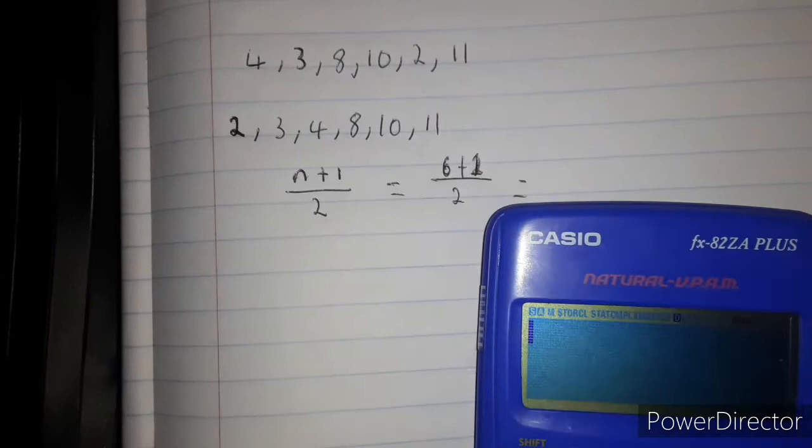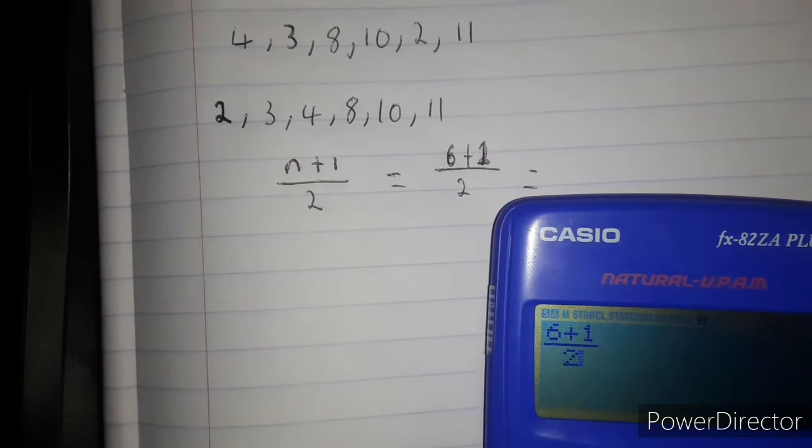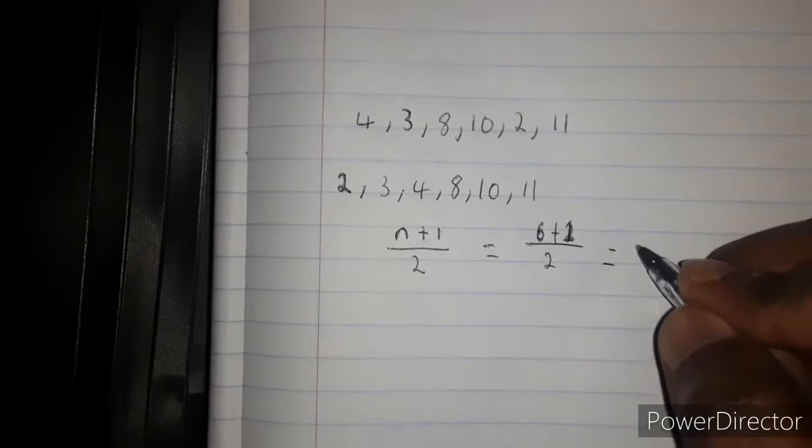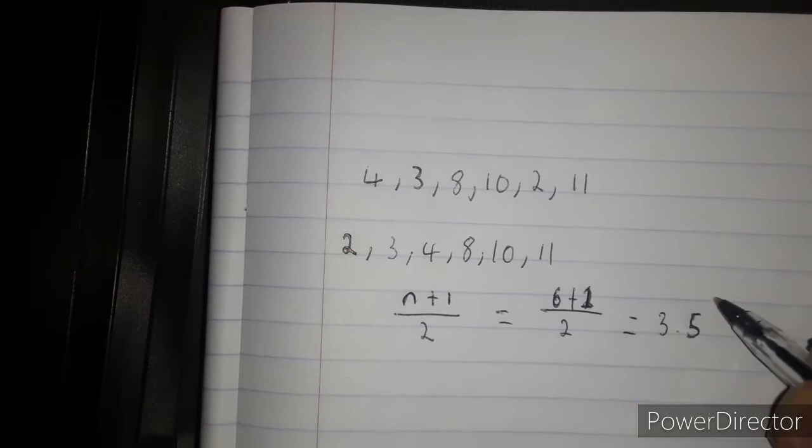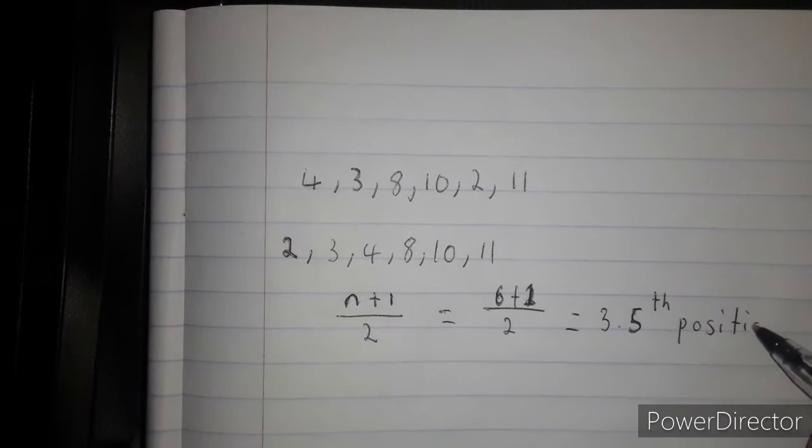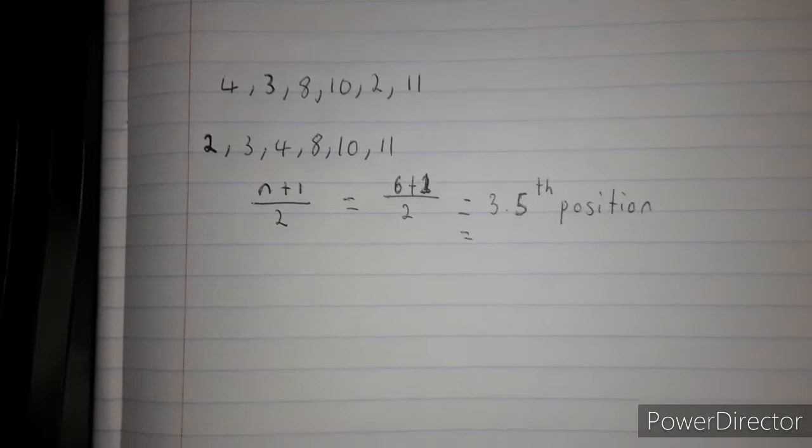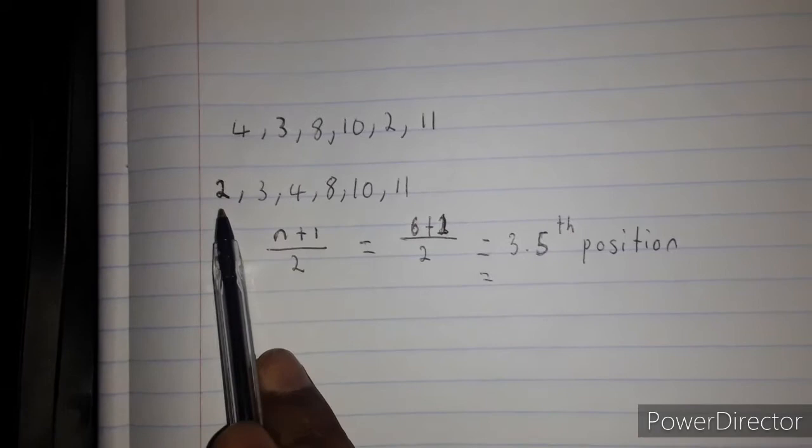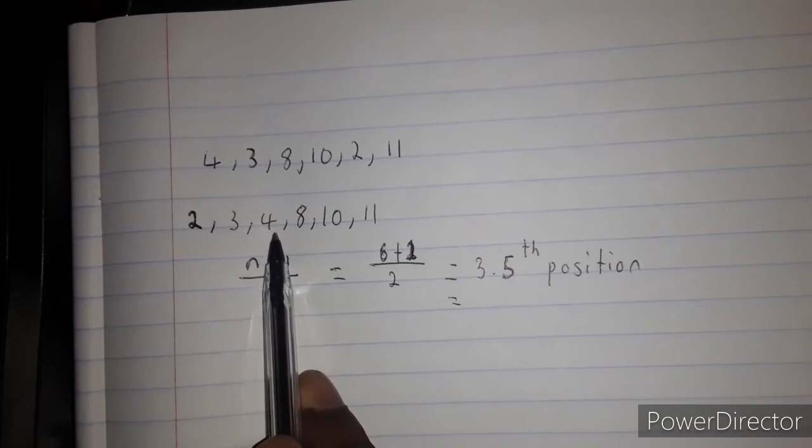So the median is on the 3.5 position. Now let us calculate which number is on the 3.5 position: 1, 2, 3, which is 3.5 in the middle. So the median is somewhere there.